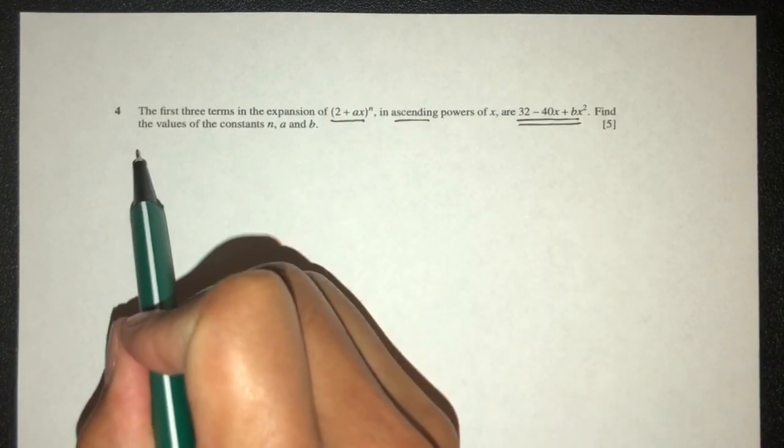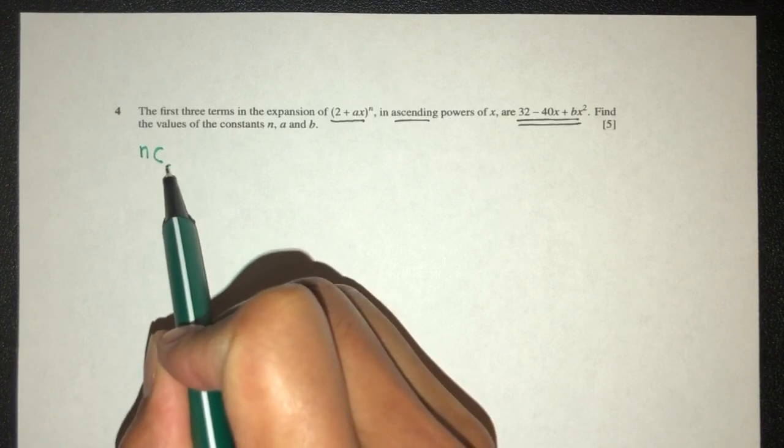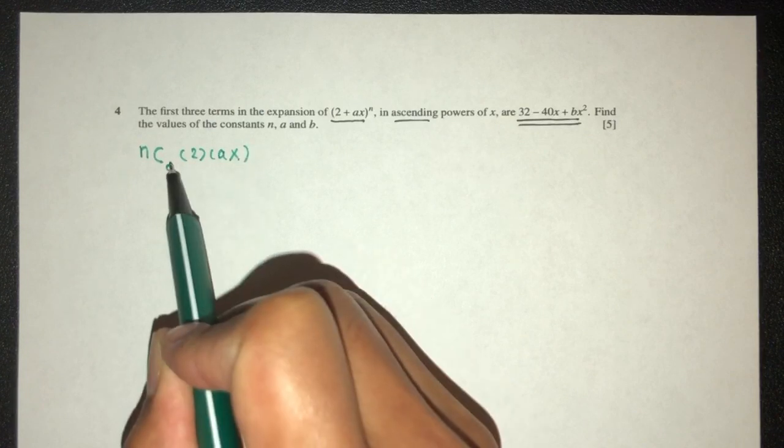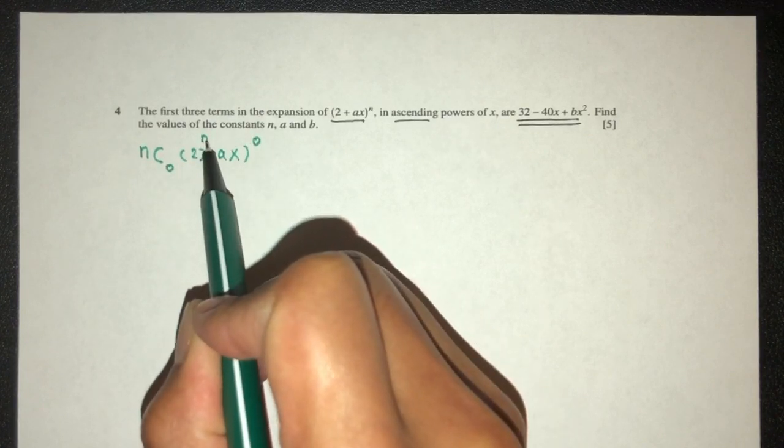How would you expand this? You will do n combination. First term will be 0, then we have 2 here, that will be ax. This is 0, this also will be 0, and this will be n, right?